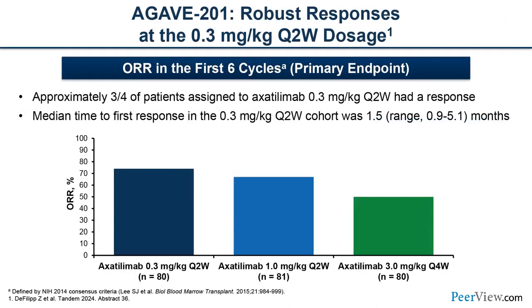All three doses met the primary endpoint of response, but the highest response rates were seen in the lowest dose cohort — 0.3 mg/kg every two weeks. This was a somewhat unexpected finding, as typically one would expect higher doses to yield greater efficacy. This dose-response relationship is still under investigation, and preclinical models are being developed to better understand the kinetics of the medication in light of these findings.